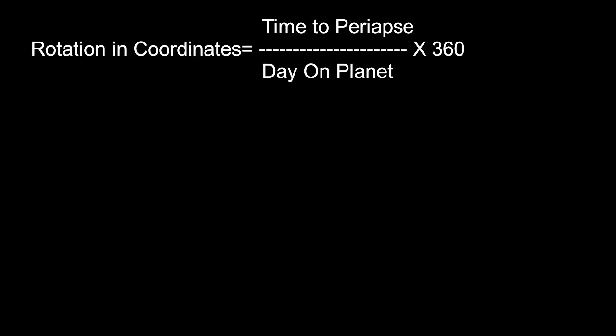Now the next step is to plug all those numbers into this formula. So we have the length of a day on Kerbin which comes out to be 21,540 seconds. And over that we put our time till periapsis in seconds which is 2350. Now we multiply that by 360 to convert that number into coordinates. And that gives us 39.27.